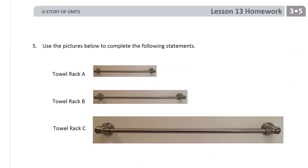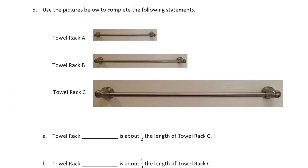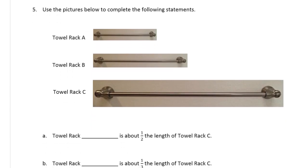Lesson 13. Still going. Use the pictures below to complete the following statements. We have towel rack A, towel rack B, and towel rack C. So towel rack, let's see, towel rack C. Which one is about half the length of towel rack C? Let's see. A would go to about here. That's not half. So it's got to be towel rack B is about half.